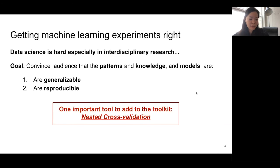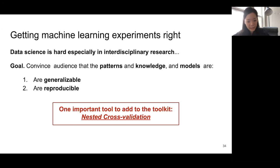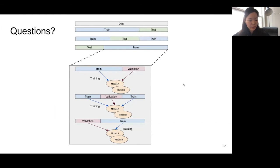For today's workshop — getting machine learning experiments right — we know that data science is hard, especially in interdisciplinary research. The ultimate goal is to convince the audience that the patterns and knowledge from your models are both generalizable and reproducible. We now have one more important tool added to the toolkit, which is nested cross-validation. We hope you enjoyed today's workshop and learned something new, and we're happy to answer any questions.